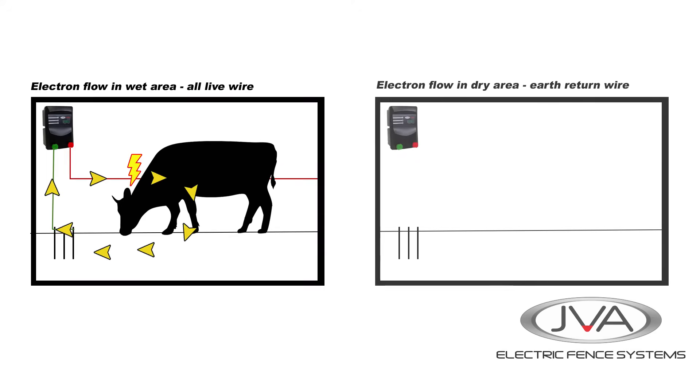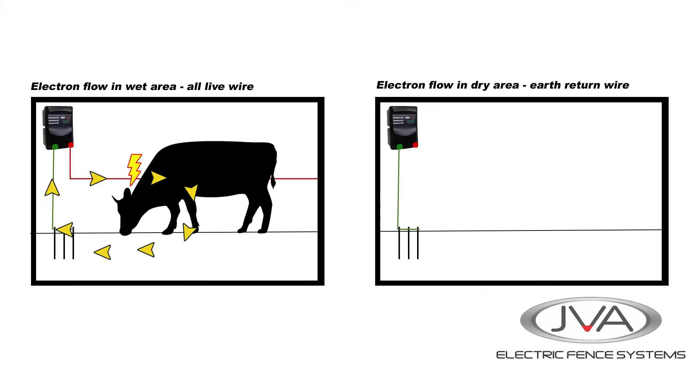The problem came in when we had dry ground. When the ground is dry, getting the circuit back through the ground is a challenge. So we then had the positive wire and we took a negative wire that ran parallel on the fence line.